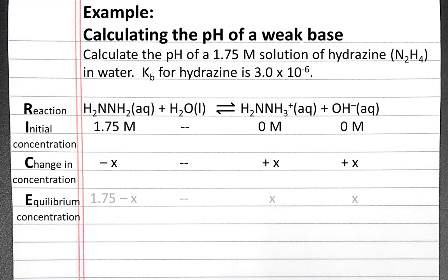So for our equilibrium concentrations, for hydrazine it will be 1.75 minus x, and hydrazonium and hydroxide will each be x.